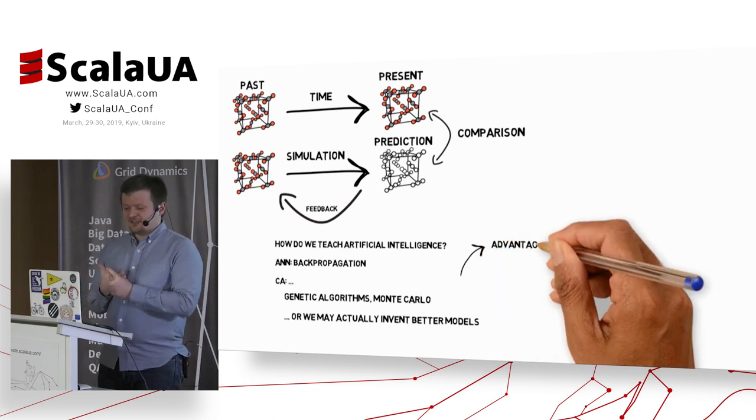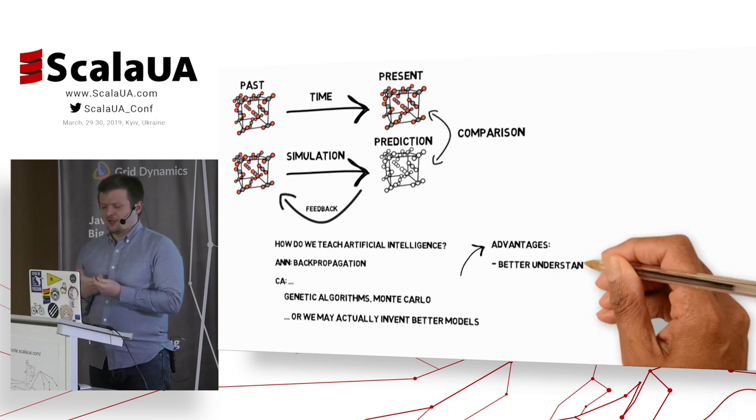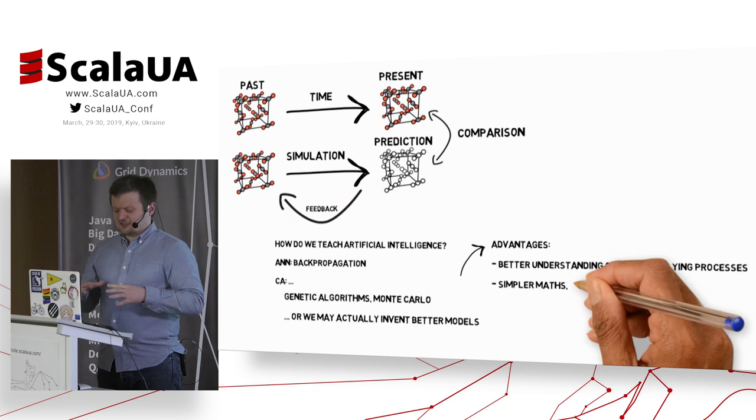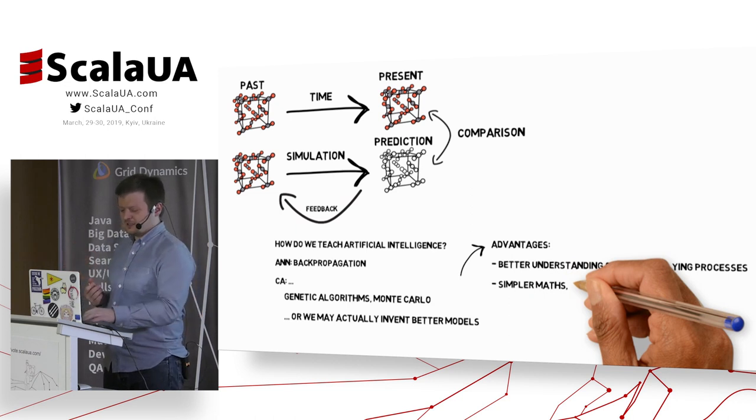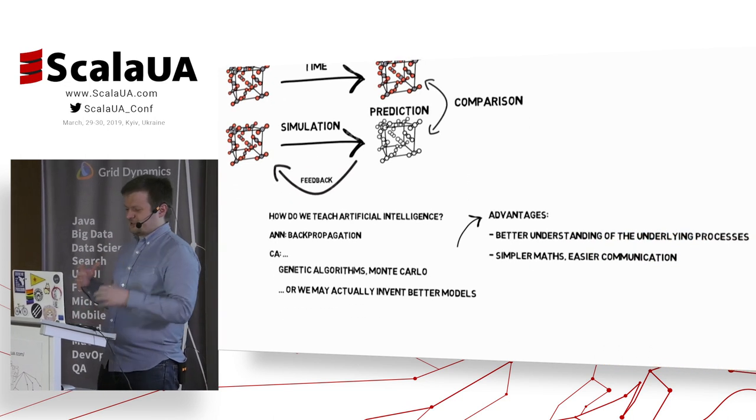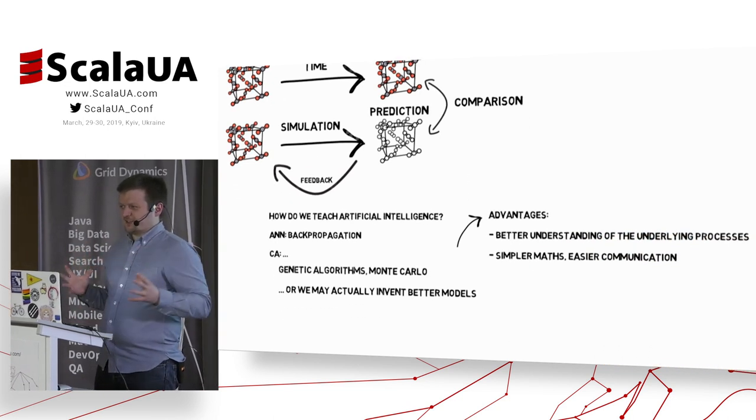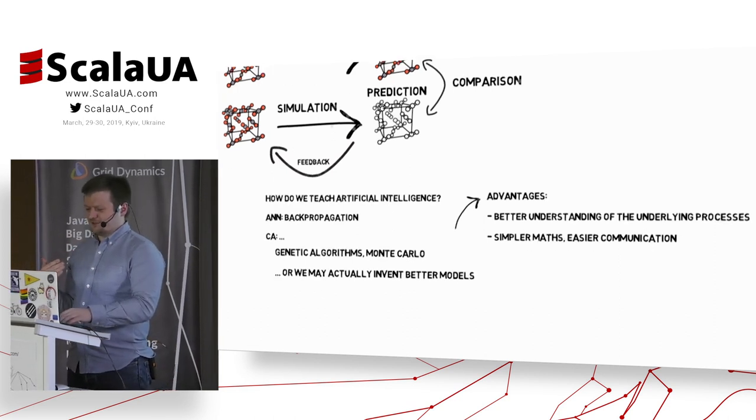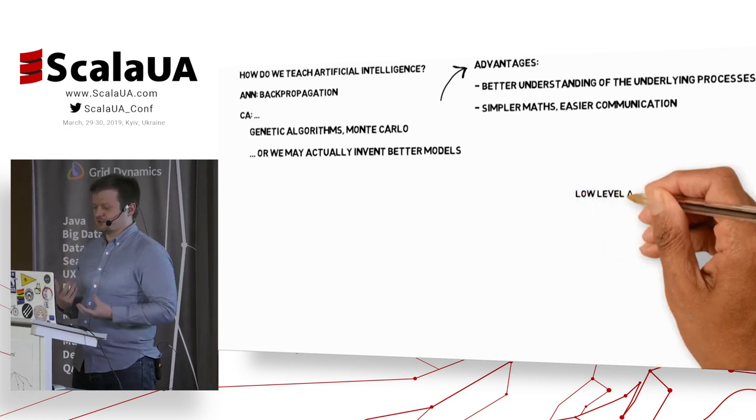There are some advantages though. We have a better understanding of the underlying processes because cellular automata work in a way that are more easily, easy to grasp by human beings. It works locally and on some kind of 2D or 3D boards, which is like the way we live and the way we think about the world. The mathematics is simpler because we try to split complex equations into simple maths. And our communications is also easier because we use simple words and intuitions.